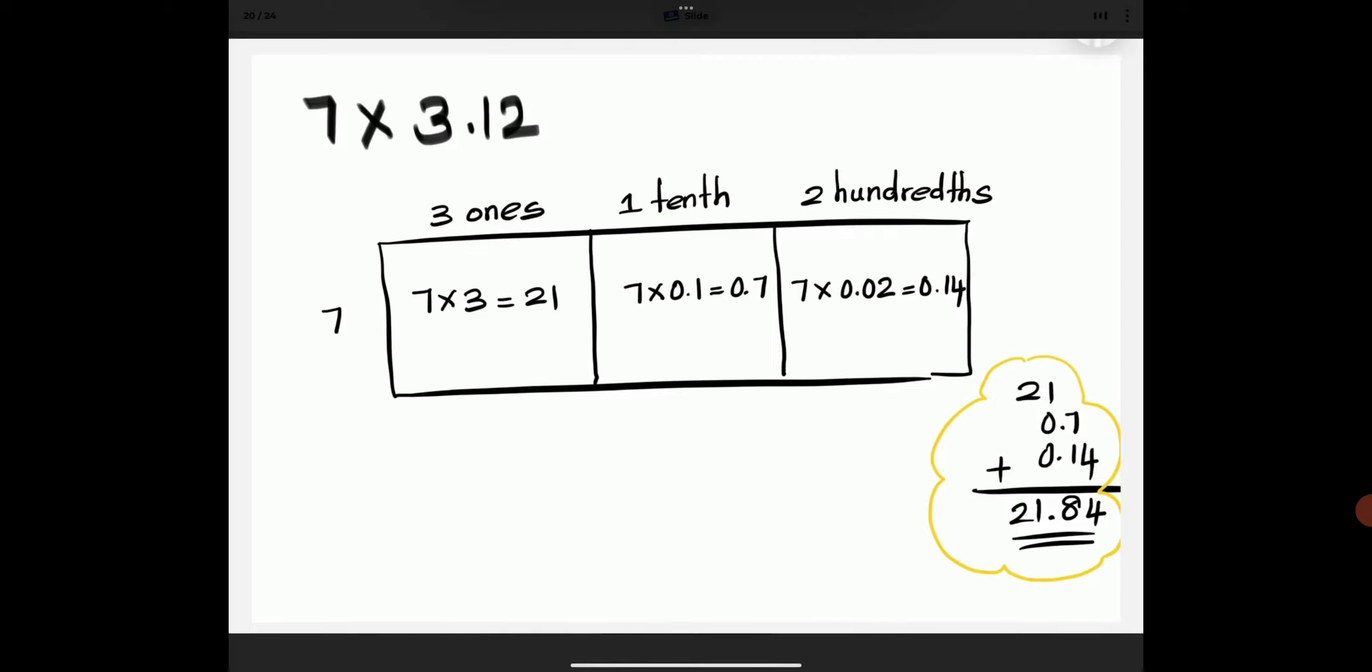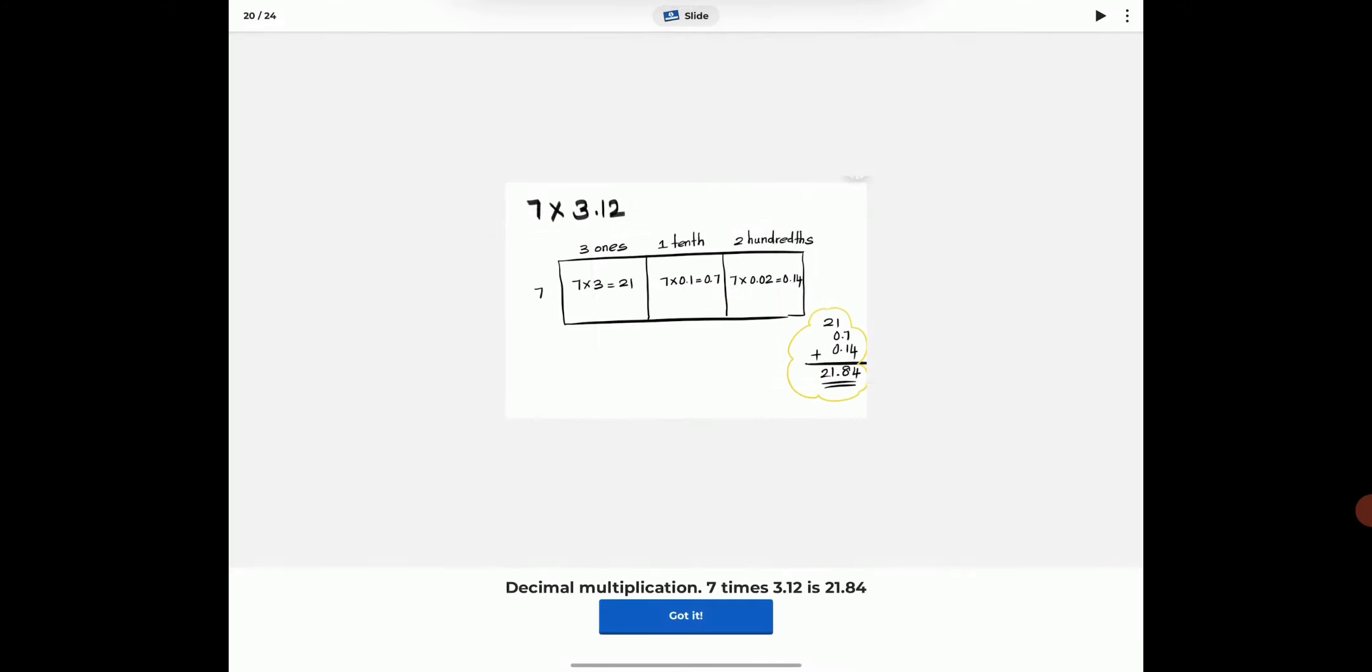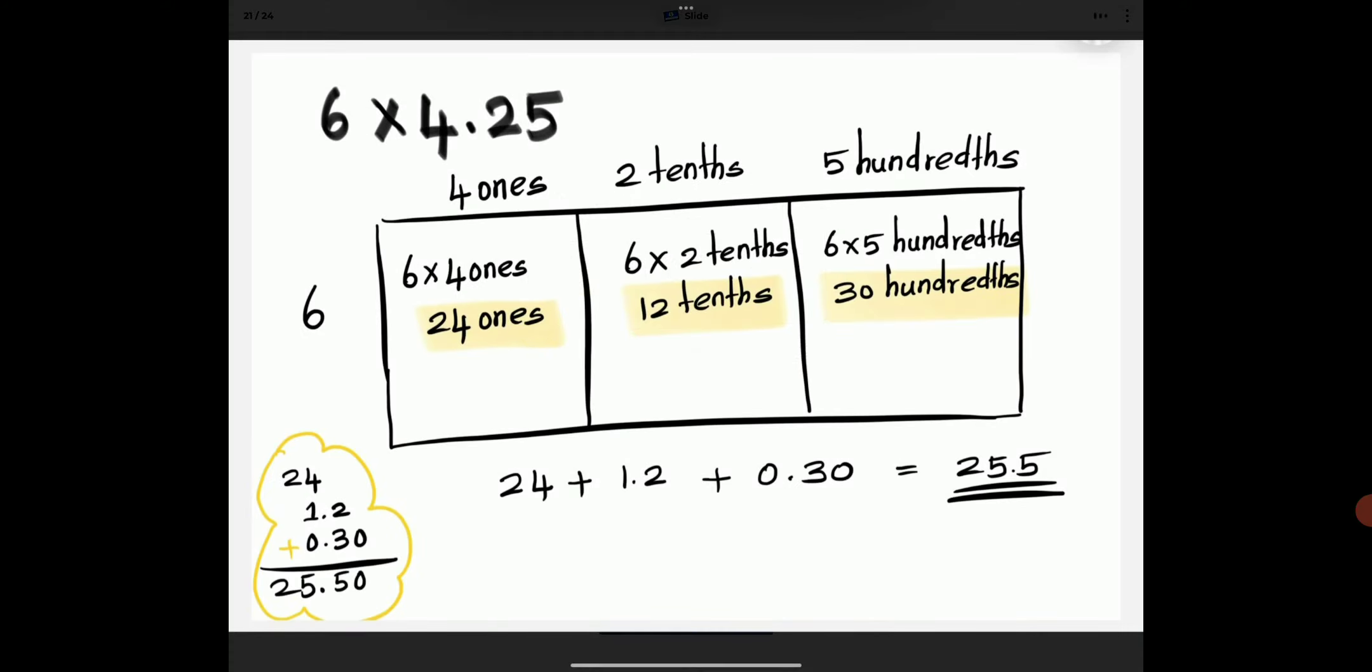7 times 3.12 is 21.84. 6 times 4.25 is 25.5. In area model, 6 is the width and 4.25 is the length.